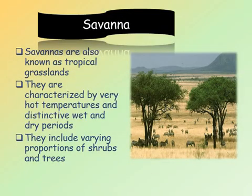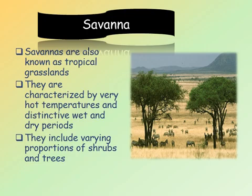Savannahs are also known as tropical grasslands. They are characterized by very hot temperatures and distinctive wet and dry periods. They include varying proportions of shrubs and trees. Savannahs have more trees than the temperate grasslands.